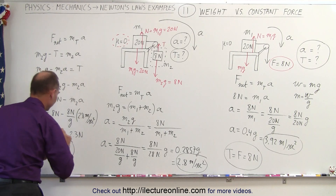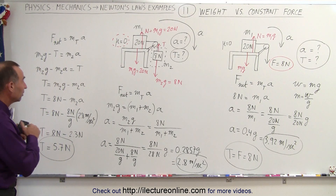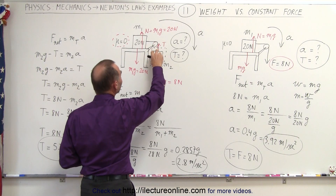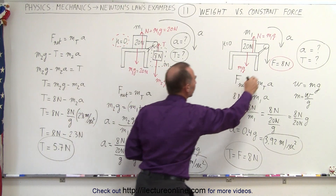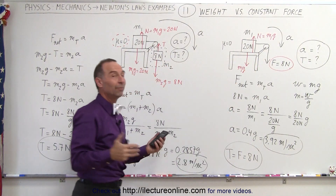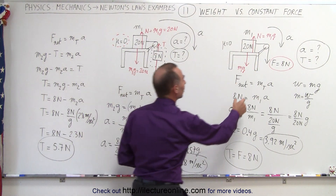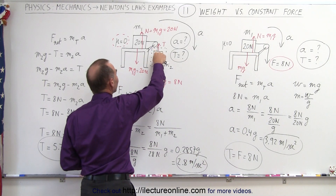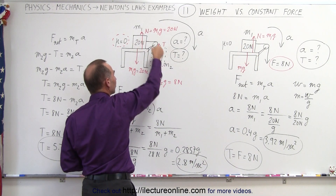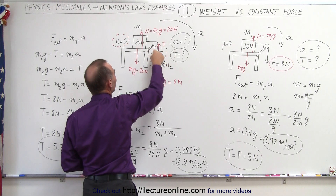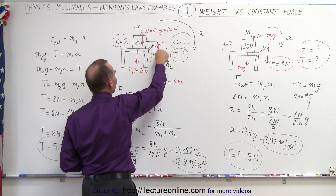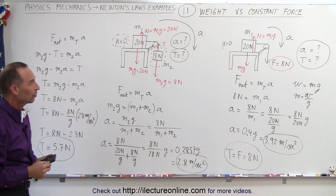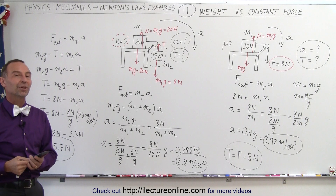Notice we get very different results for both acceleration and tension when it's an object with a weight causing acceleration versus a constant force. The big difference is that with a constant force you only have one mass being accelerated. But when a hanging weight drives the system, that object itself also needs to be accelerated — so the force acts not just on the table mass alone but on both objects together. That's why we get different results in the two situations, and that's how it's done.